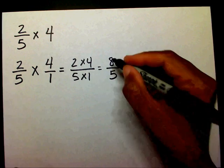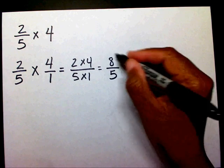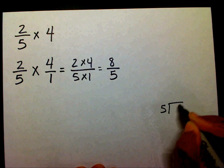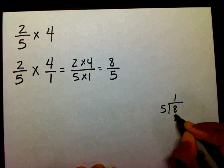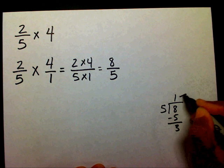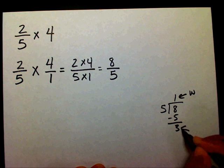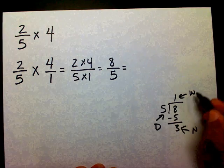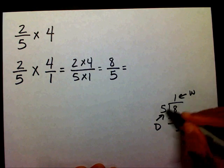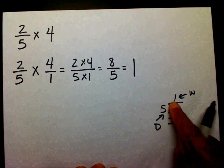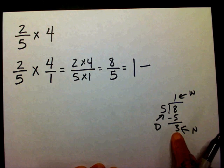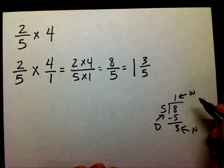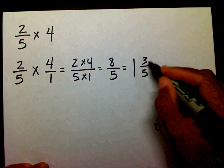Again, I have an improper fraction. So I'm going to divide 8 divided by 5. Here's my whole number, here's my numerator, here's my denominator. So my mixed number is going to be 1, and 3 is my numerator, and 5 is my denominator.